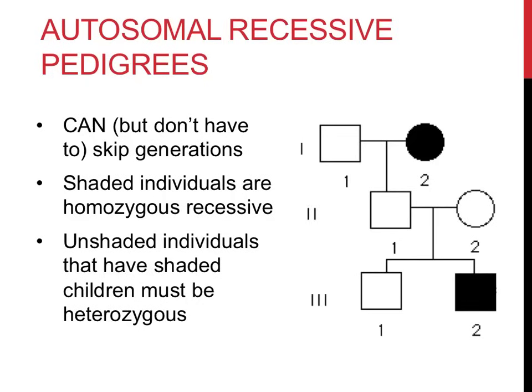Examples of autosomal recessive disorders include Tay-Sachs disease, sickle cell anemia, and cystic fibrosis. There are some basic guidelines when identifying autosomal recessive trait pedigrees. First, these traits can, but don't have to, skip generations, as shown in the picture to the right. Roman numeral 1-2 has the trait; neither 2-1 nor 2-2 do, but one of their children, Roman numeral 3-2, does. To show an autosomal recessive disorder, you must have two recessive alleles, since one dominant allele would cover up the recessive trait. All shaded individuals must therefore be homozygous recessive. Additionally, every parent must either be a carrier or have the trait in order to pass it on to their children.